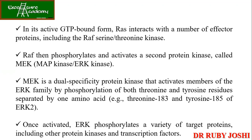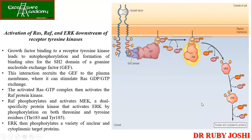Phosphorylation happens on threonine and tyrosine residues which are separated by one amino acid — specifically threonine 183 and tyrosine 185 of the ERK family. Once activated, ERK phosphorylates a variety of target proteins including other kinases and transcription factors. When these transcription factors are phosphorylated, they get activated and go inside the nucleus to carry out gene expression.